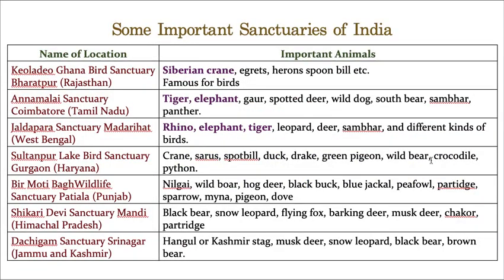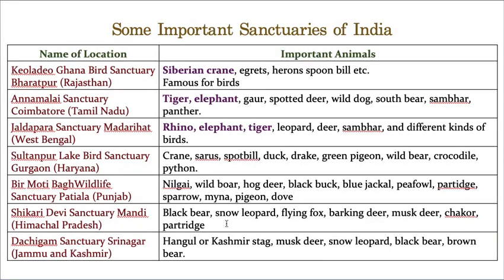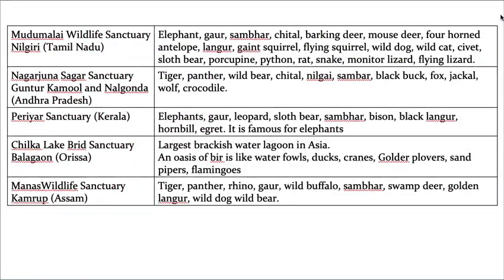For important sanctuaries, Keoladeo is well famous for Siberian cranes. Annamalai Sanctuary is very famous for tigers and elephants. Stop the video for two to three minutes, read the name of each sanctuary, and remember the important species associated with it. Don't try to memorize all the details of each sanctuary - just note the key species.